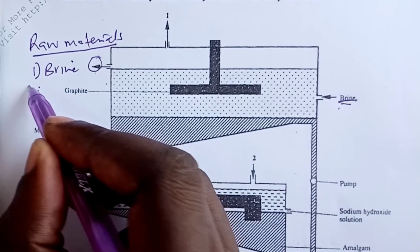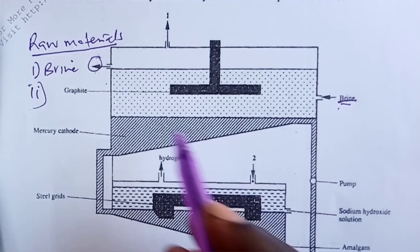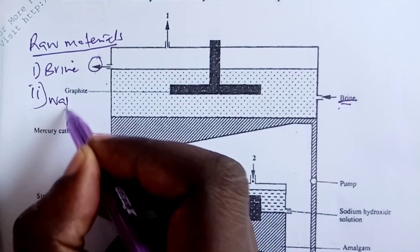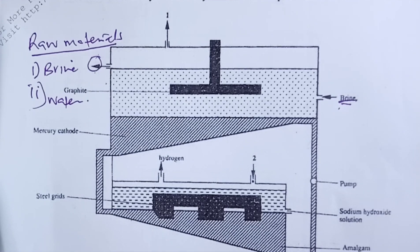If you look at the downer cell here, through opening two we shall have water coming in. So the mercury cell has brine as the electrolyte and then we also bring in water as a second raw material.